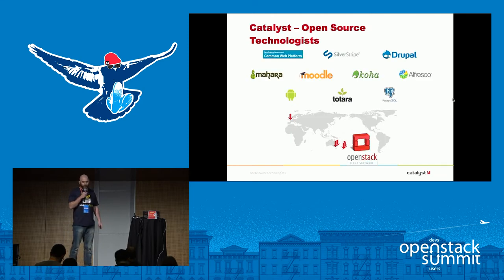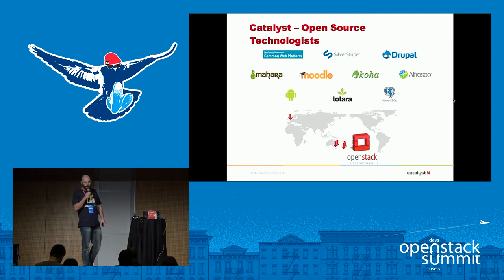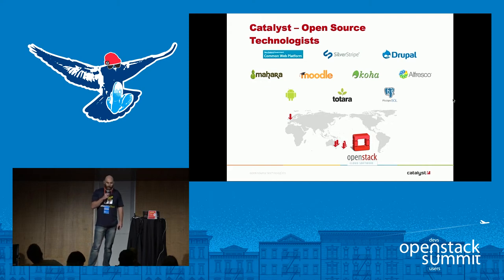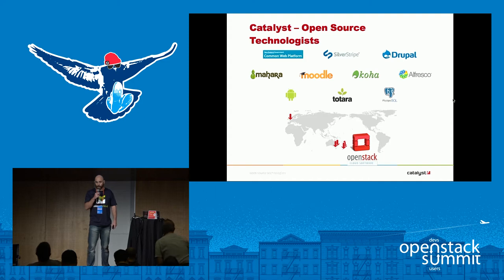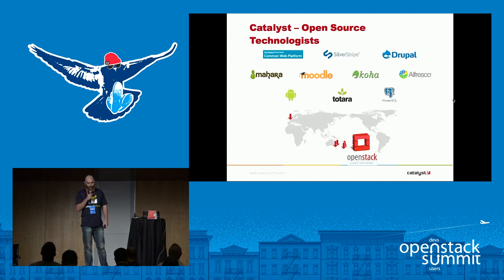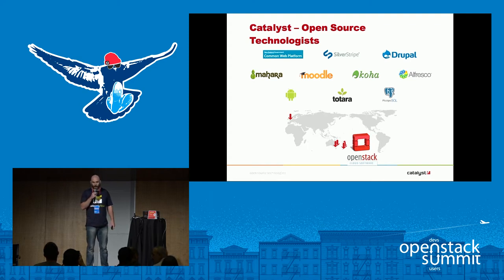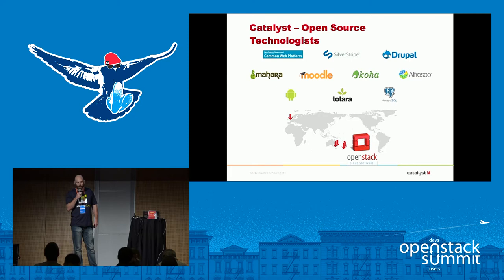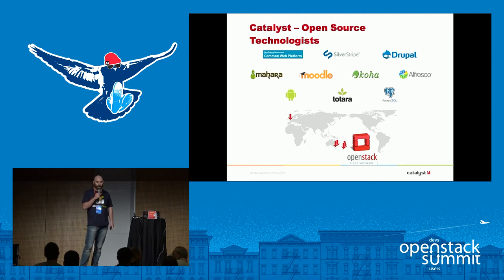Just a bit about Catalyst to give you some context. We're all about open source technology. These are some of the systems and technologies we work with. Our headquarters is in Wellington, New Zealand — I'm a New Zealander. We also have offices in Melbourne, Sydney, and Brisbane in Australia, and a UK office in Brighton. We have our own OpenStack public cloud in Wellington, New Zealand, with a number of regions, and that's been going since 2014. This was the first public cloud in New Zealand. Our open source focus took us to OpenStack.